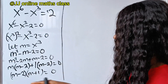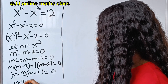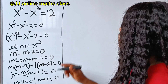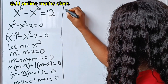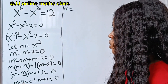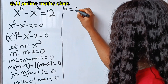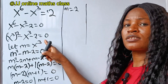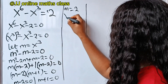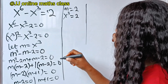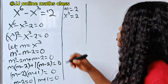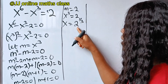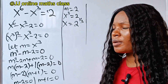We can now write that m minus 2 equals 0 or m plus 1 equals 0. Solving the left side: m equals 2. Recalling that m equals x to the power of 3, we have x to the power of 3 equals 2. Taking cube roots of both sides, x equals 2 to the power of one-third, that is the cube root of 2.